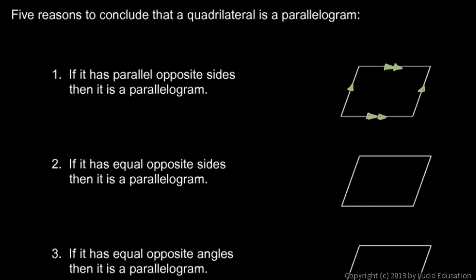This statement — if it has parallel opposite sides, then it is a parallelogram — is the definition of a parallelogram. We don't have to prove that statement; we know it's true by definition. A parallelogram is defined as a quadrilateral with parallel opposite sides.